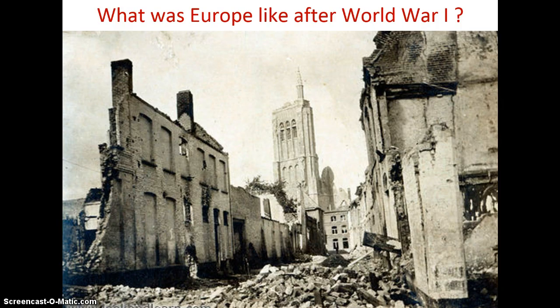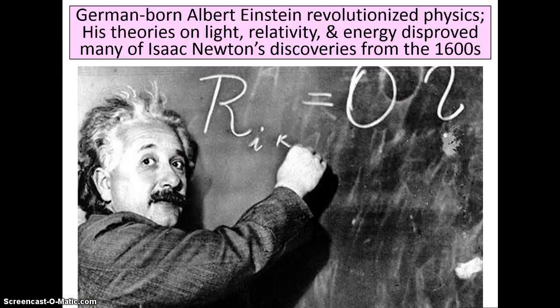After World War I ended, the destruction of Europe was unprecedented. There's massive destruction in the infrastructure of many of the countries that had battles going on there. And of course, you know what country wasn't touched — that's the United States. So that's part of the reason why the United States comes out after World War I as a superpower.